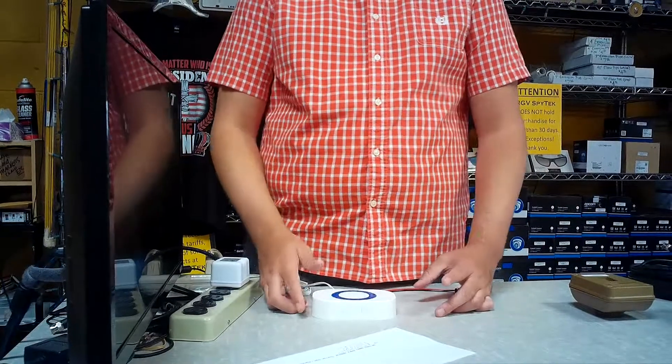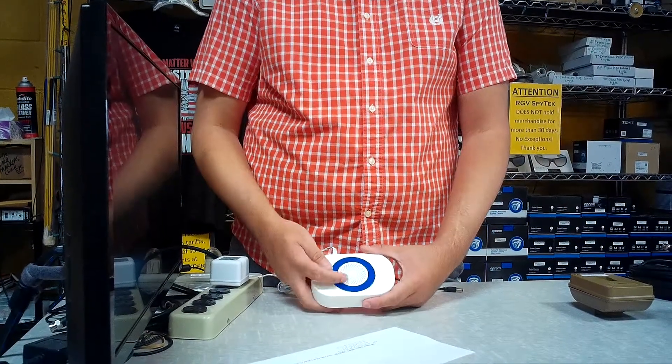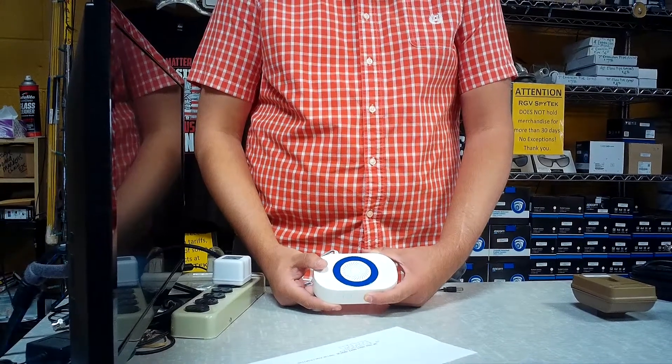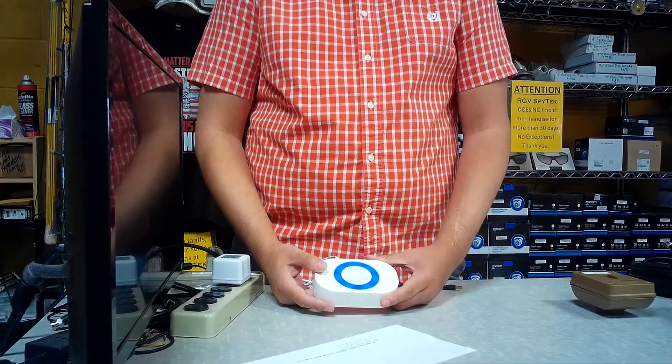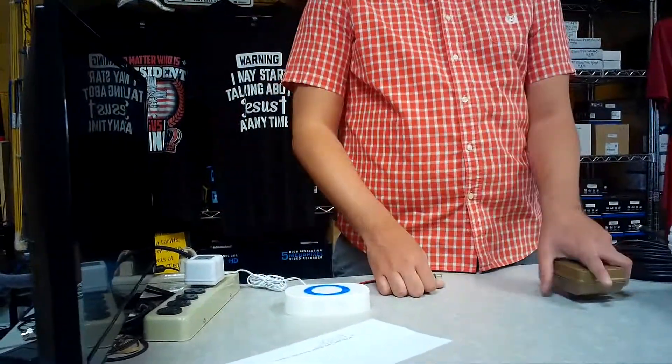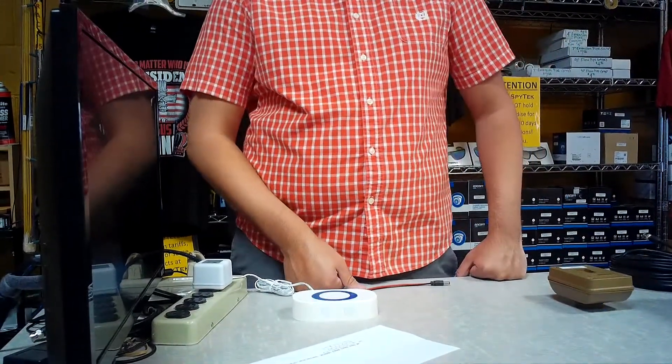So once you're done activating all your sensors, then you're going to press and hold the mode button until the lights go solid. So press and hold it. The lights are solid now. So then now we activate the sensor, it's going to go off like that.